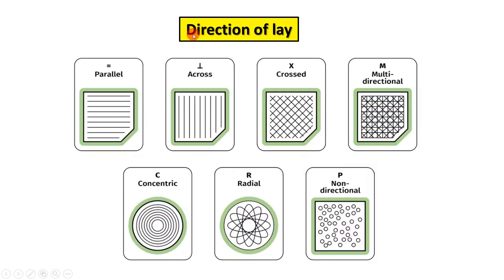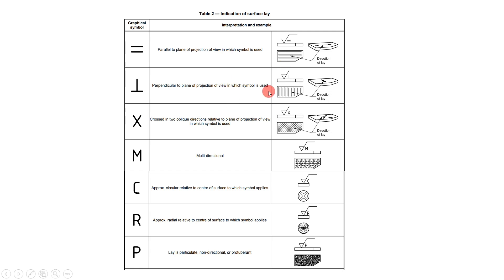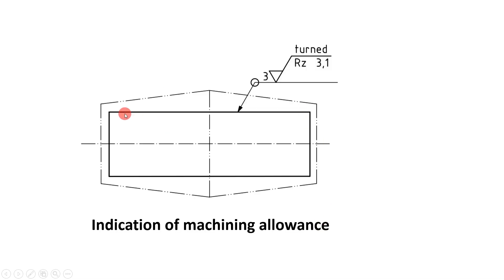The direction of lay textures obtained from different manufacturing processes are: parallel, perpendicular, cross, multi-directional, concentric (obtained on face turning on a lathe), radial, and non-directional. The cross-directional lay is generally seen on knurling. These directions are represented by symbols: M for multi-directional, X for cross-directional, perpendicular, parallel, and radial (concentric).